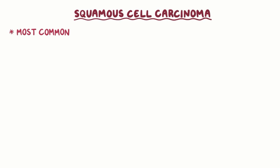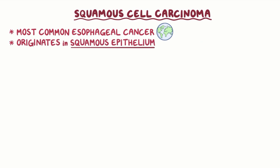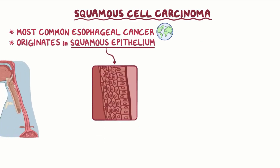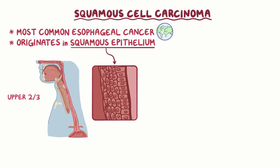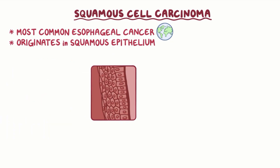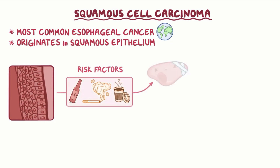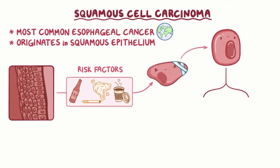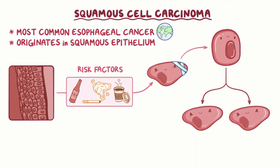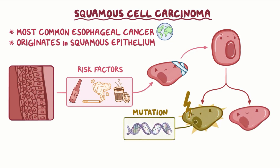Squamous cell carcinoma is the most common type of esophageal cancer worldwide, and it originates in the squamous epithelium of the esophagus, most often in the upper two-thirds. When this epithelium is repeatedly exposed to risk factors like alcohol, cigarette smoke, or hot fluids, it gets damaged, so the squamous cells divide to replace the old damaged cells. With each division, there's a risk that a mutation can occur in the genes that are in charge of the cell cycle and cell division.